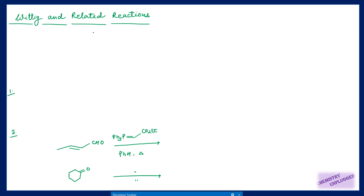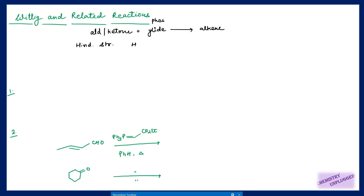The Wittig reaction is basically the reaction of aldehydes or ketones with phosphonium ylides to give us alkene. When you have a hindered structure of aldehyde or ketone, or hindered ylides, then formation of alkene is not easy. We need HMPA — hexamethylene phosphoramide — for this reaction, which is used to increase the rate of reaction.